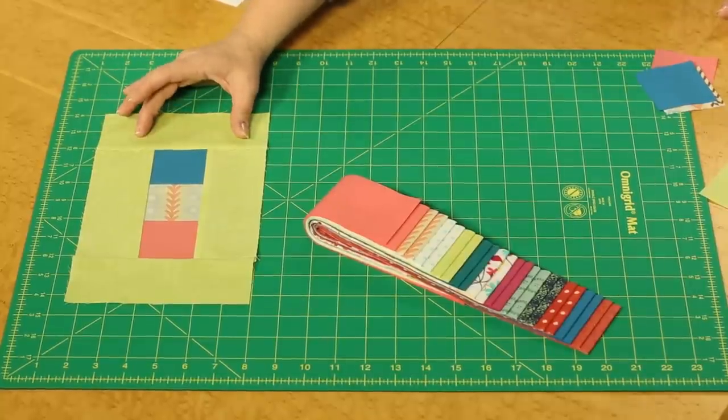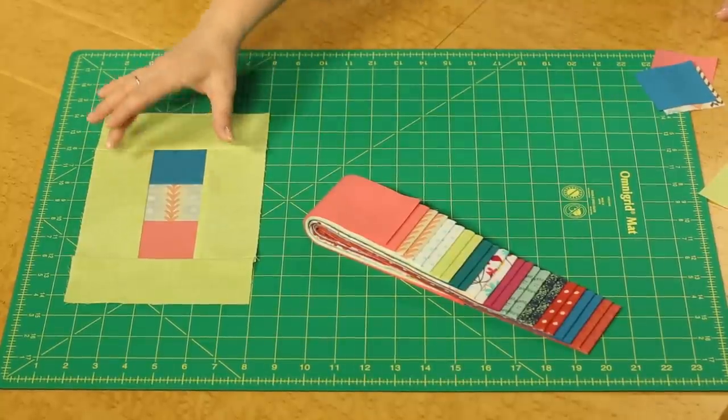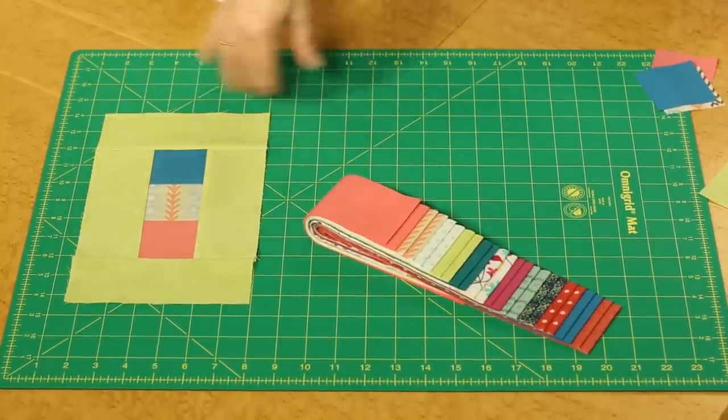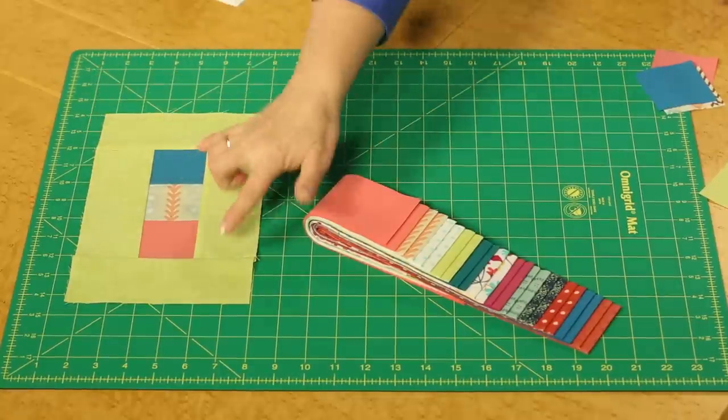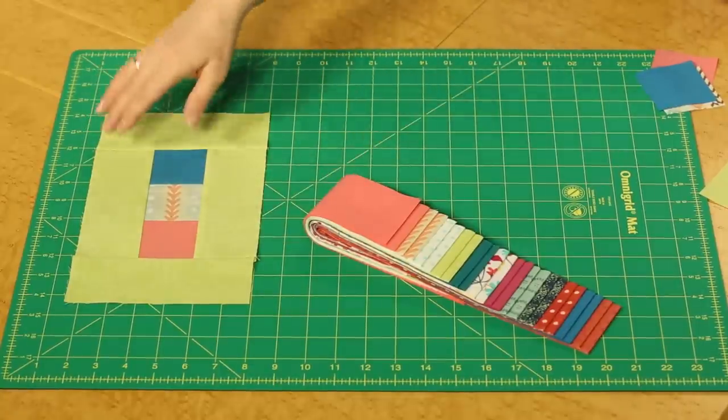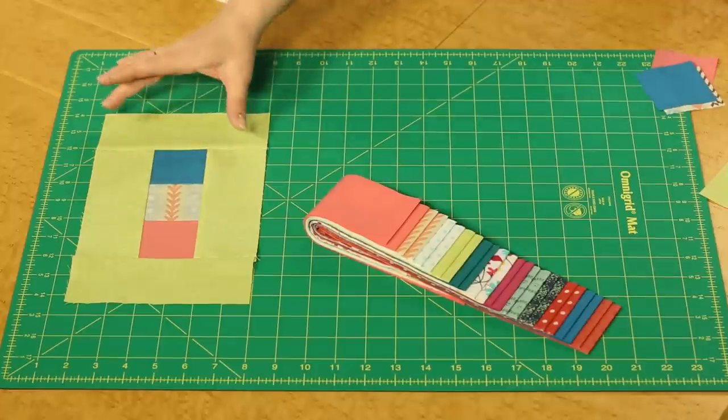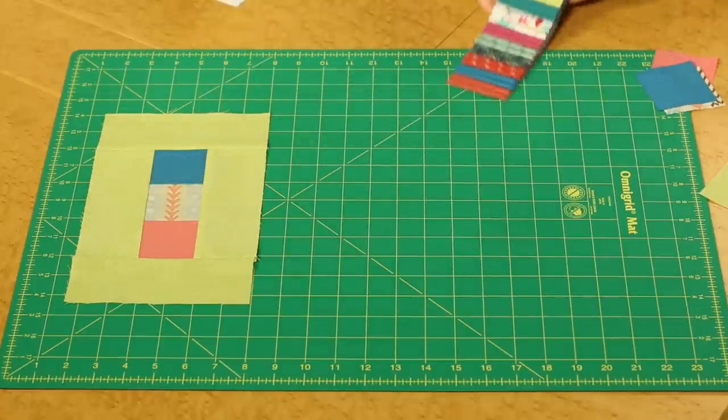The nice part about this is that the rectangles that you've cut, a lot of times when you go to put together a block, rectangles on one side are one size and the opposite are longer. Here they're the same size around so the nice part about quick construction here.